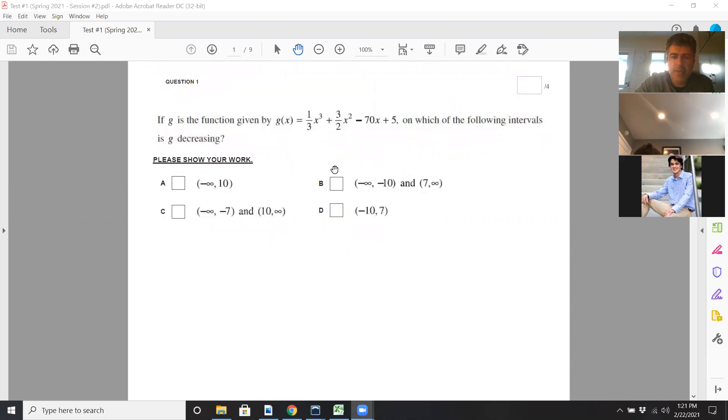So here you're told to find where your function is decreasing. What you need to do is take your derivative, which is going to be x squared, because you put 3 to the front, drop x by 1, plus 3x minus 70. Set that equal to 0 and factor. Factor should be pretty simple, x plus 10, x minus 7.